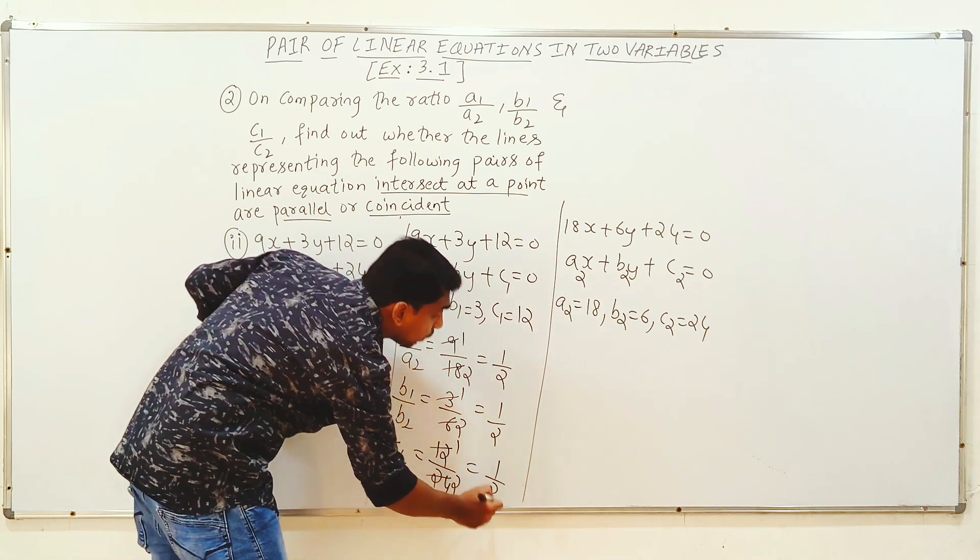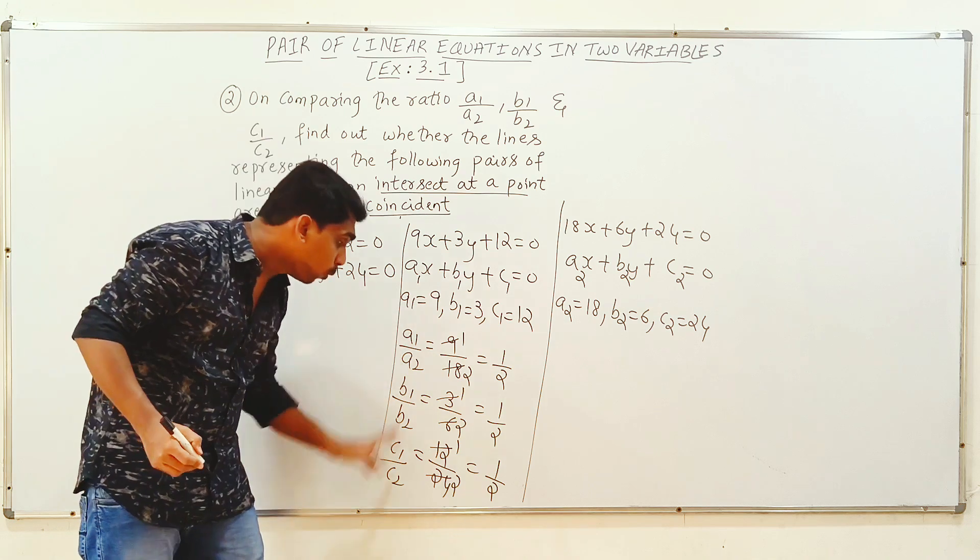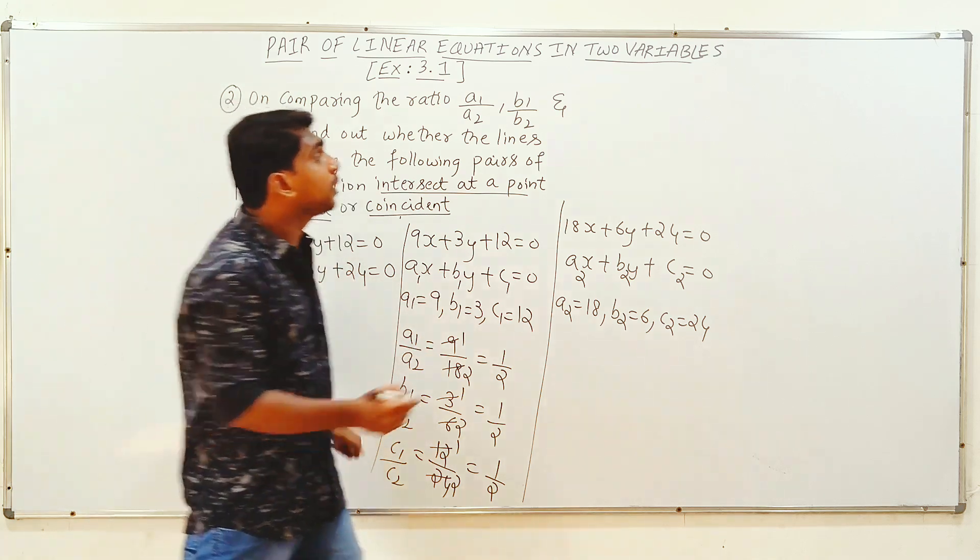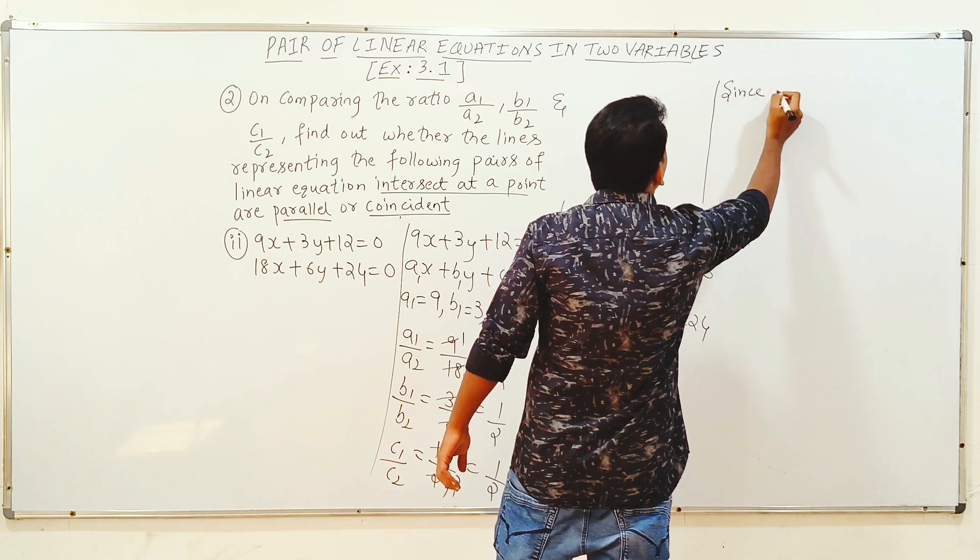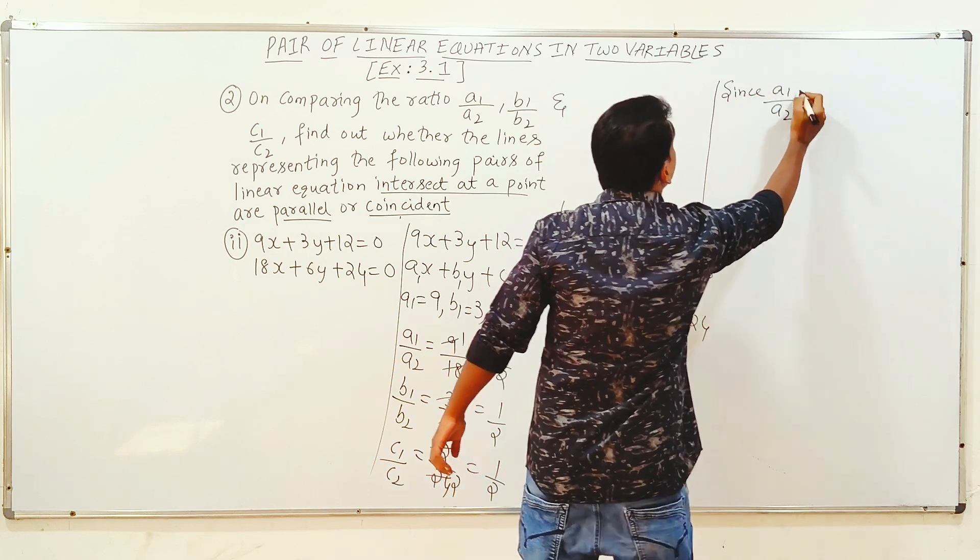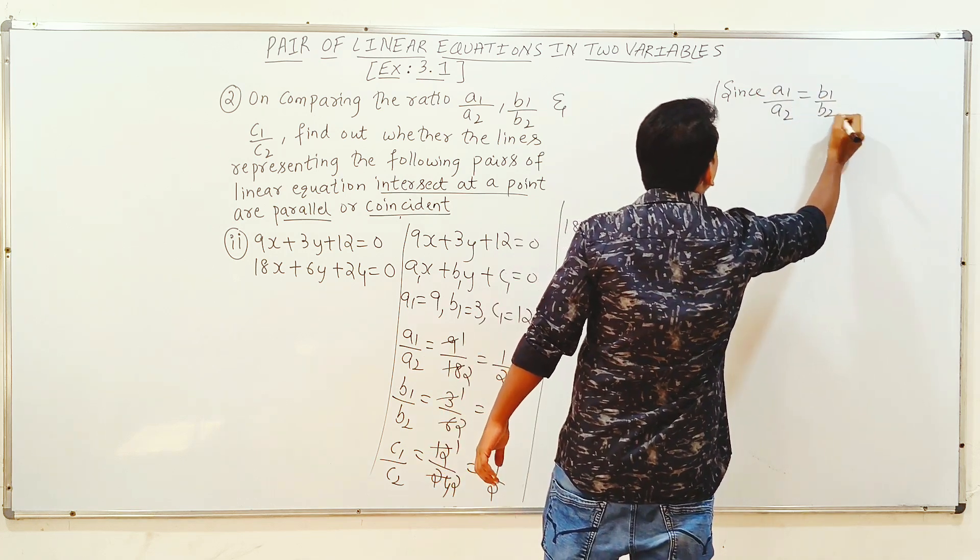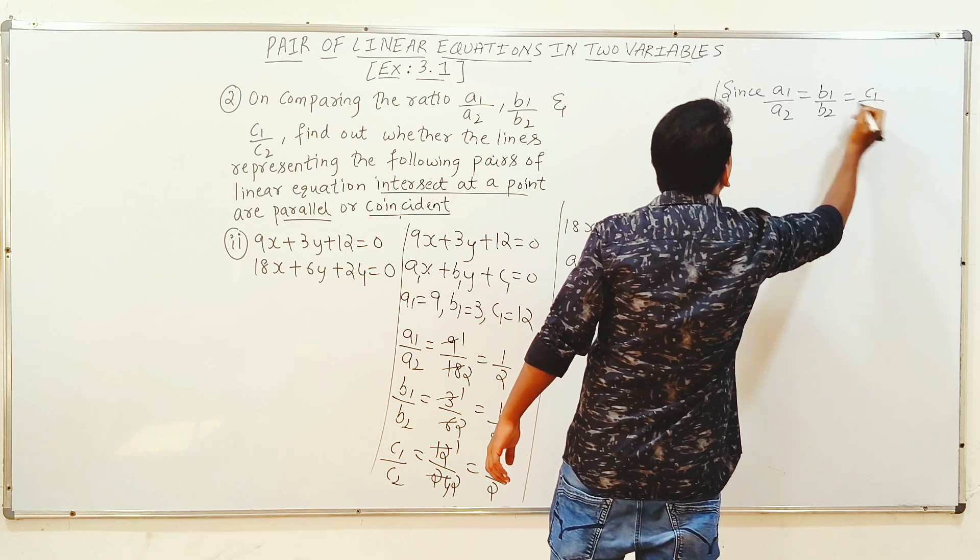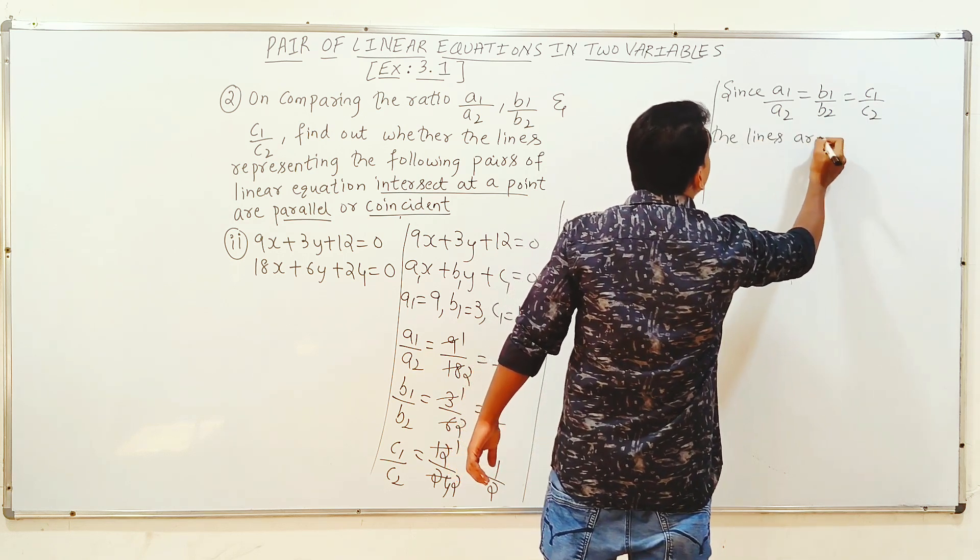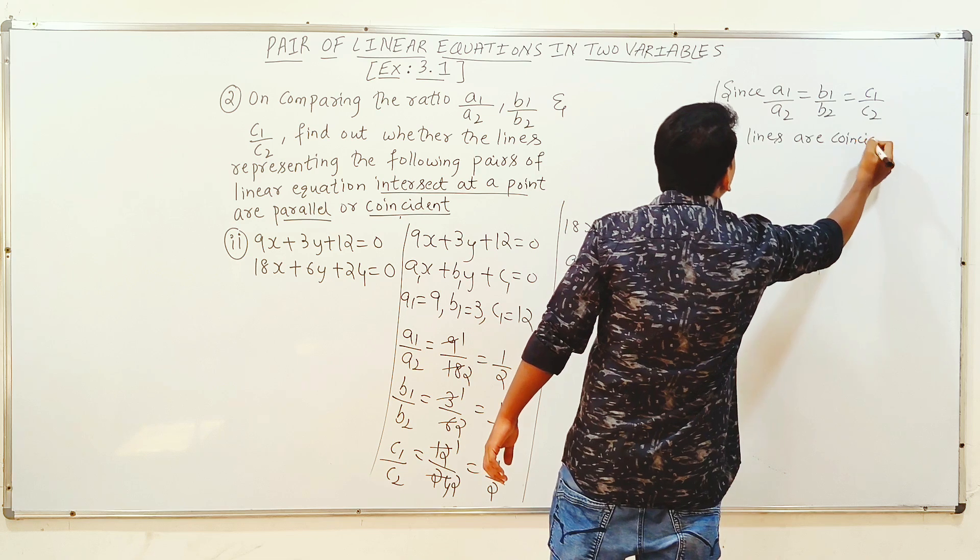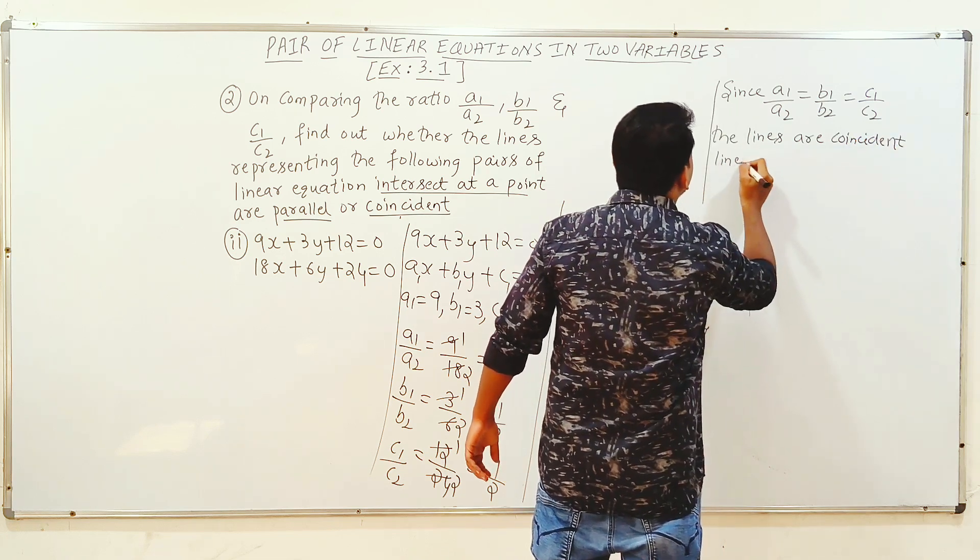You are more equal, more equal. So now since A1 by A2 is equal to B1 by B2 is equal to C1 by C2, the lines are coincident lines.